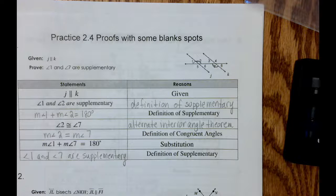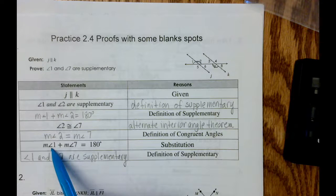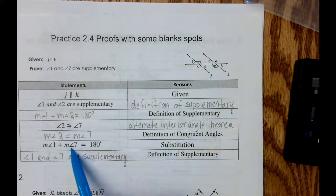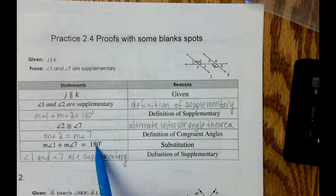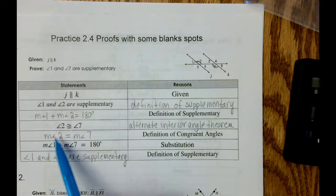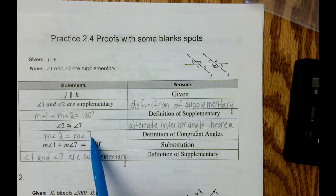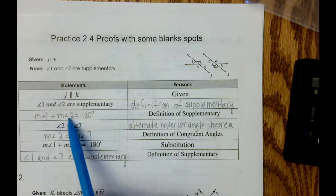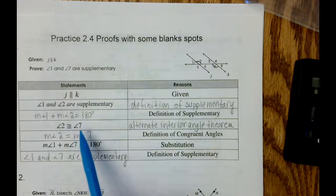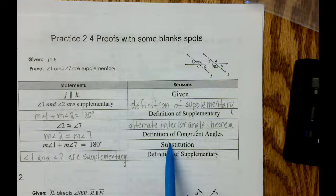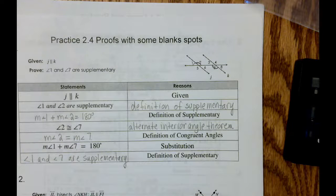Now we can say that the measure of angle one plus the measure of angle seven equals 180 degrees. Since the measure of angle two equals the measure of angle seven, we substitute the measure of angle seven in place of the measure of angle two — that's the substitution property. Therefore, angle one and angle seven are supplementary.